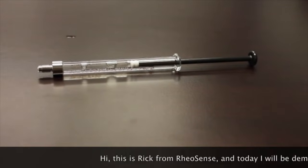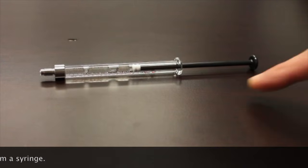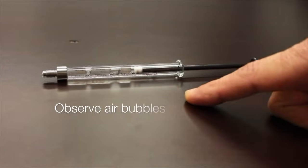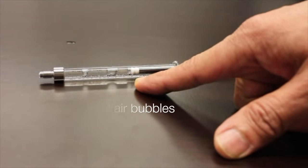Hi, this is Rick from Riosense and today I'll be demonstrating how to remove air bubbles from a syringe. In the syringe we have a few air bubbles - two in the middle and one at the base.